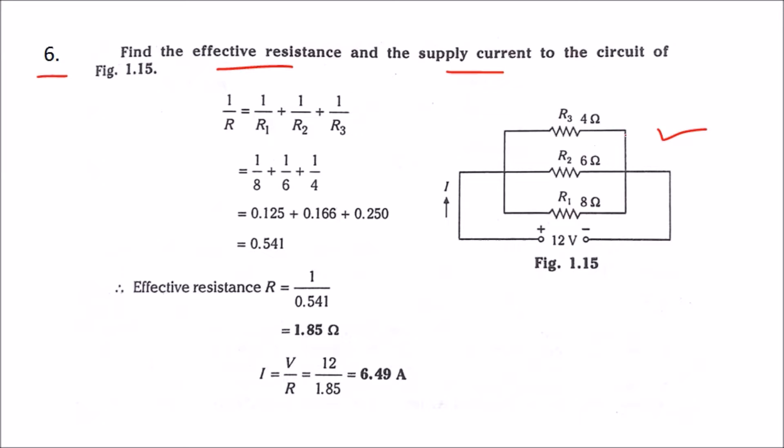Here, three resistances are connected in parallel. The supply voltage is 12 volts. Therefore, the voltage across R1 will be 12 volts, voltage across R2 will be 12 volts, and voltage across R3 will be 12 volts.